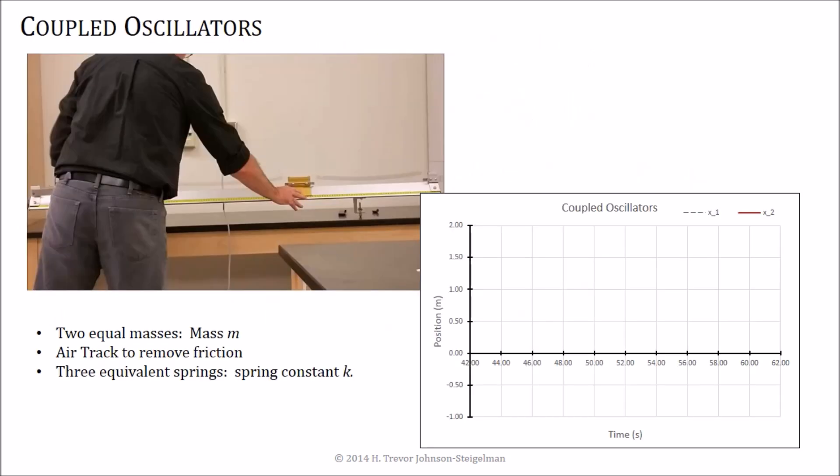In this particular setup, we've got two equal masses, each with mass m, where this is on an air track to remove friction, and we've got three equivalent springs that each have a spring constant of k.